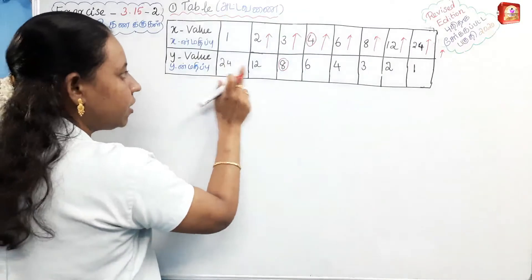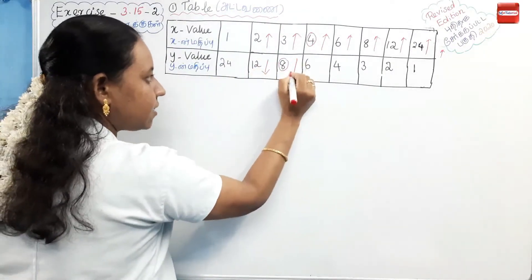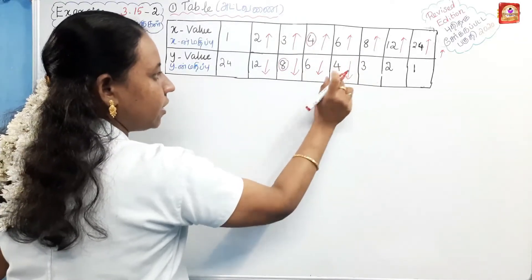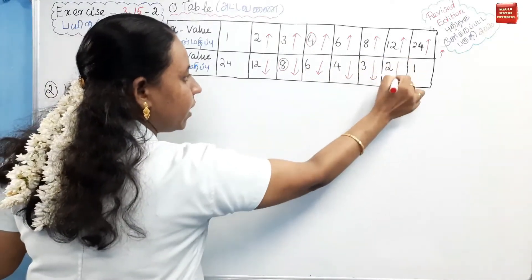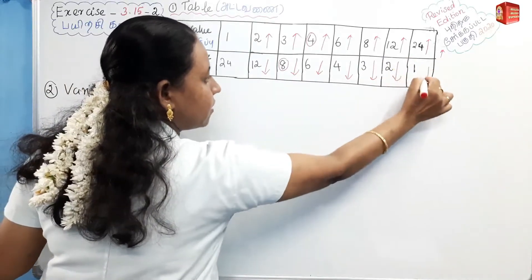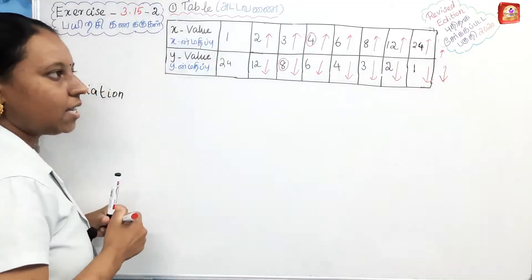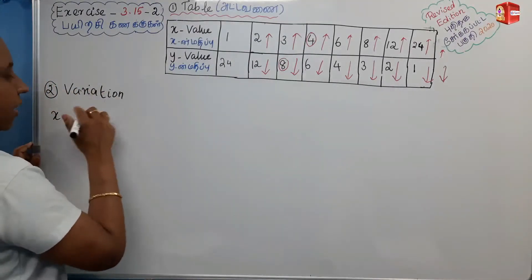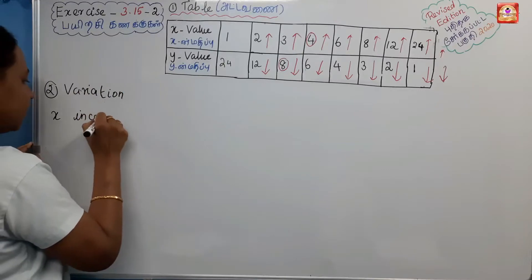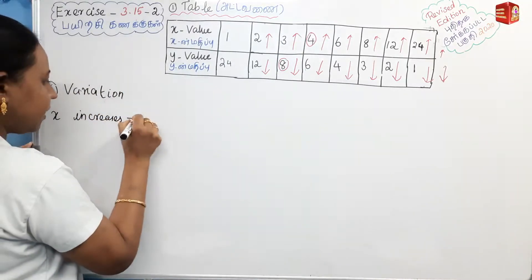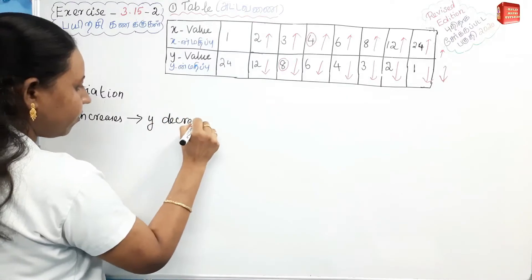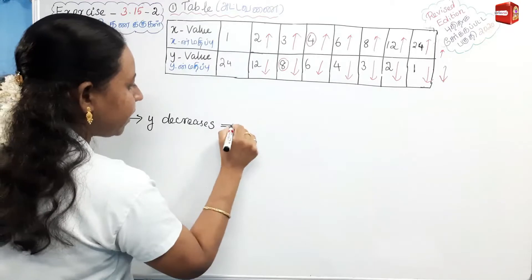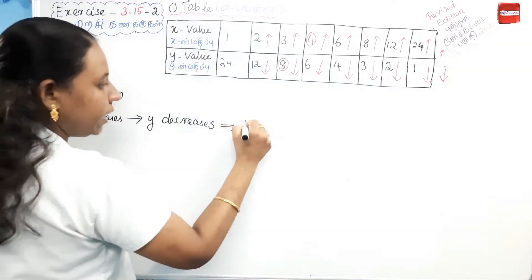Now the y-axis: from 24 to 12, then 12 to 8, 8 to 6, 6 to 4, 4 to 3, 3 to 2, and 2 to 1 — all decreasing. So overall, as x increases, y decreases. This makes it an indirect variation pair.